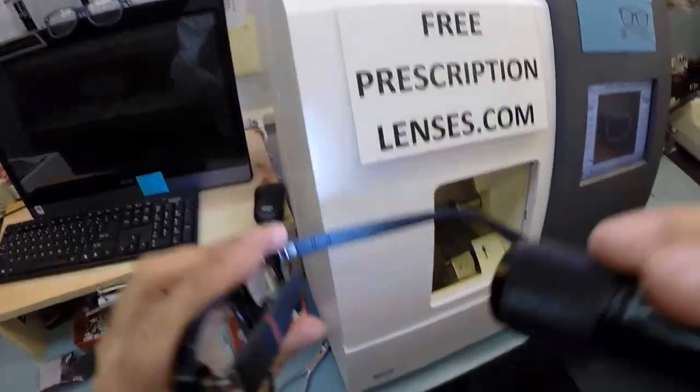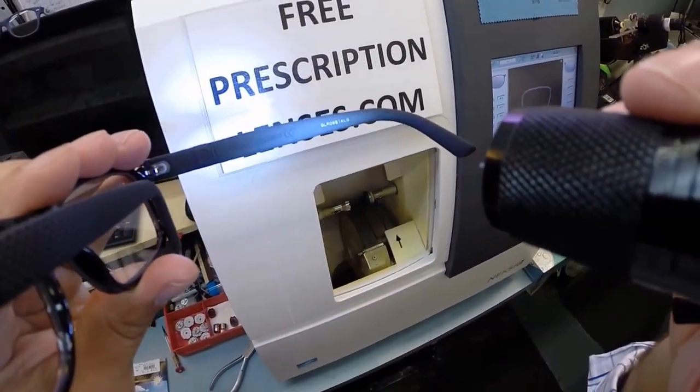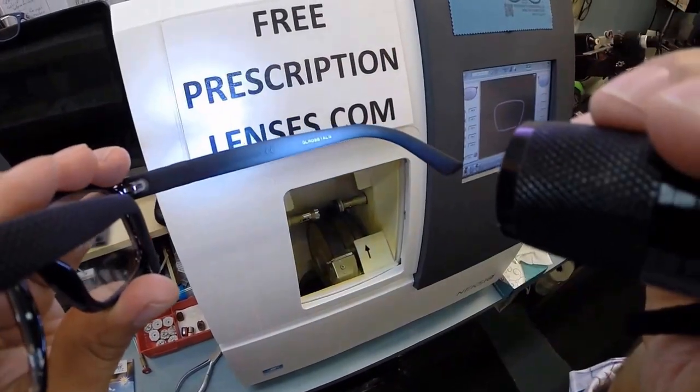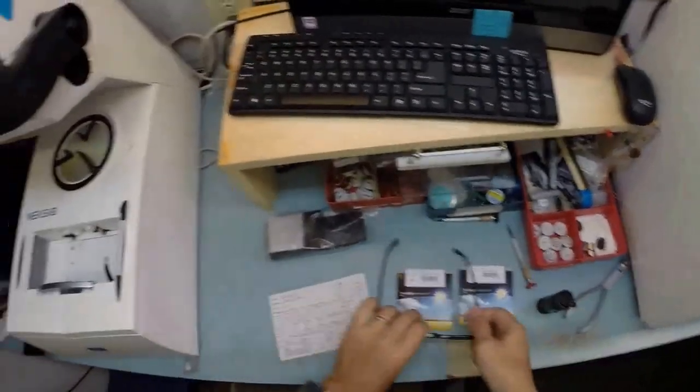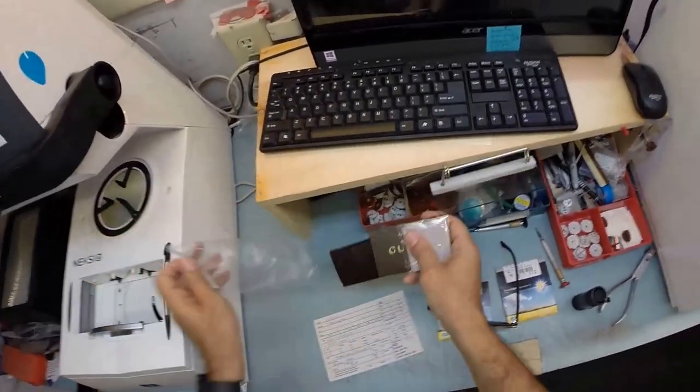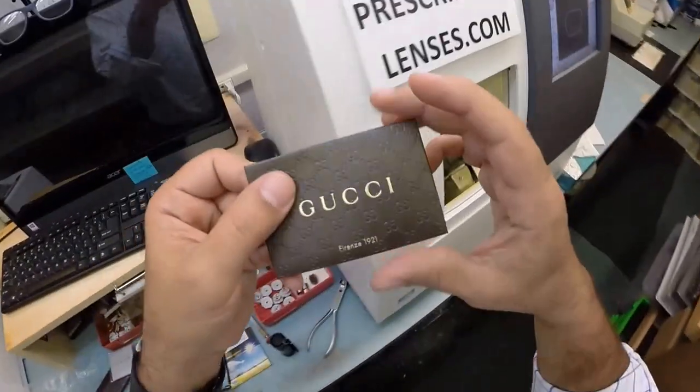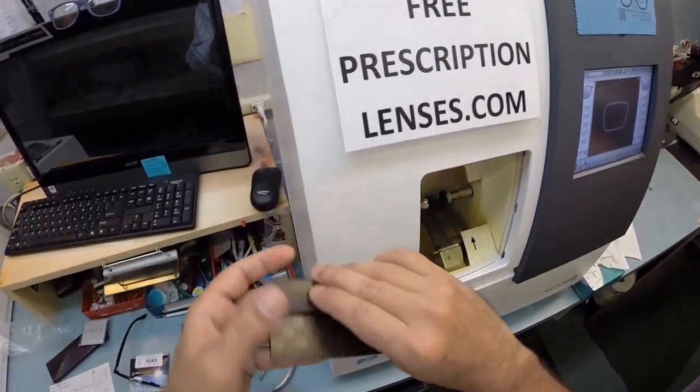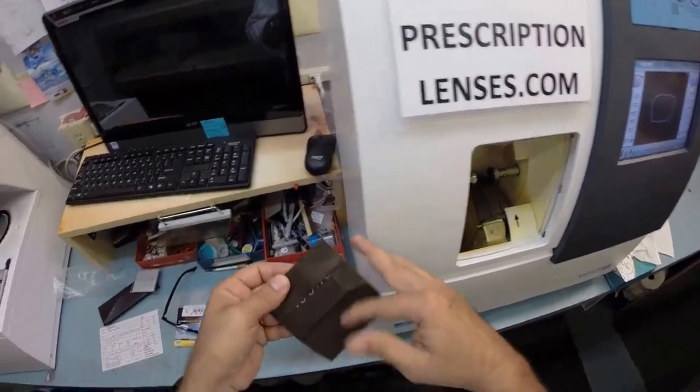Of course all Guccis are made in Italy. Right there is your serial number that you can register your product with Gucci with your card of authenticity, your COA as it's referred to. Let me open that up.